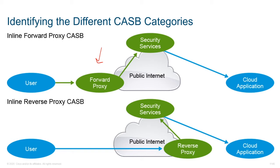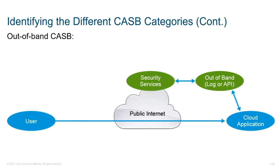Inline reverse proxying is usually located on the front side of the resource being accessed, and all of the services are secured when the user connects to the resource. Think of it as proxying before the public internet versus within the public internet. We also have out-of-band CASB.